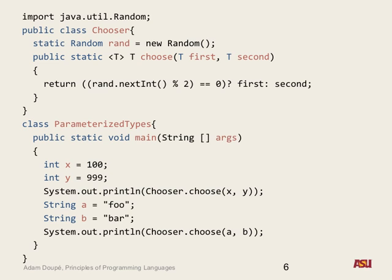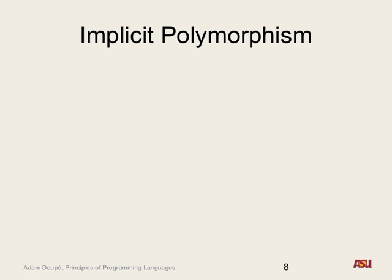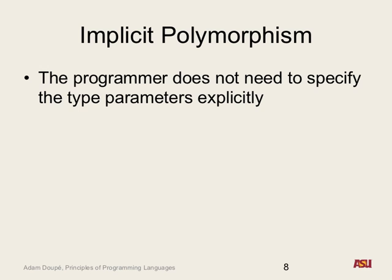This leads us to where we want to go — something even more powerful and very cool — where as the programmer we don't even want to specify the type parameters. We want to be able to not specify any type parameters and have the system infer the types automatically. Dynamic languages — in Python, JavaScript, or Ruby, do you have to specify the types of variables? No.